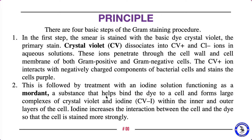The next treatment is with the mordant — Gram's iodine solution. The mordant helps the dye bind to the cell, forming a crystal violet–iodine (CVI) complex within the inner and outer layers of the cell. In this second step, crystal violet and iodine form this CVI complex. The iodine increases the interaction between the cell and the dye, so the cell is stained more strongly. At this stage, both gram positive and gram negative cells form the CVI complex and appear purple.